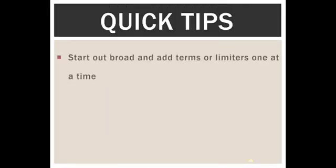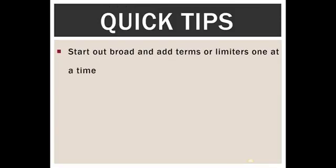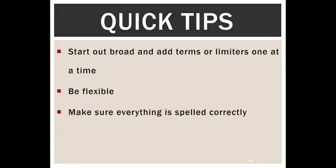A couple of quick tips: you want to start out broad and add terms or limiters one at a time. Don't throw everything in at the same time, because if you get no results, you're not sure why. So add a term, take away a term, add a limiter, take away a limiter — there's no perfect formula, you need to be flexible. Also, make sure everything is spelled correctly. Library resources will assume however you spelled something is what you're looking for, so if you spell it incorrectly, you'll just get no results.